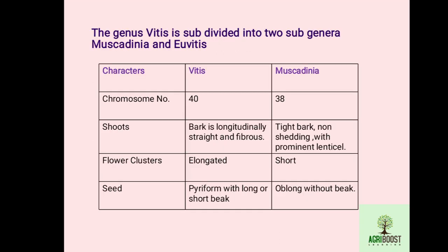The genus Vitis is subdivided into two subgenera: Euvitis and Muscadinia. True grapes belong to subgenera Euvitis, and wild species of Vitis is Muscadinia — it is usually polygamous dioecious in nature. The chromosomal number of Euvitis is 40, whereas the chromosome number of Muscadinia is 38.